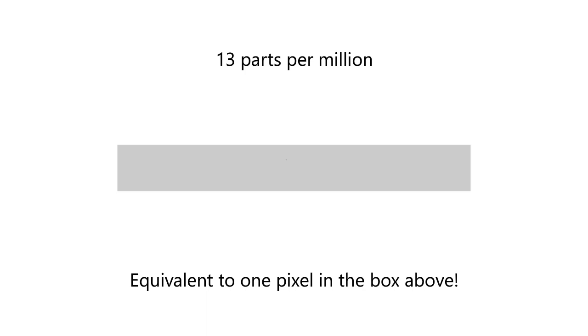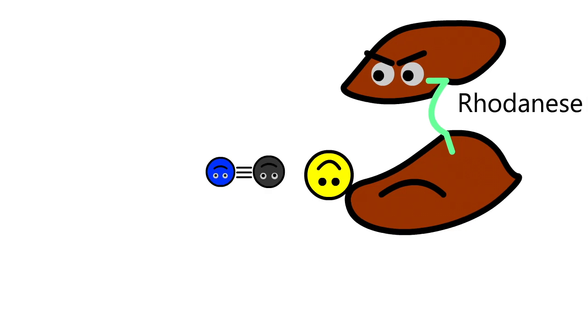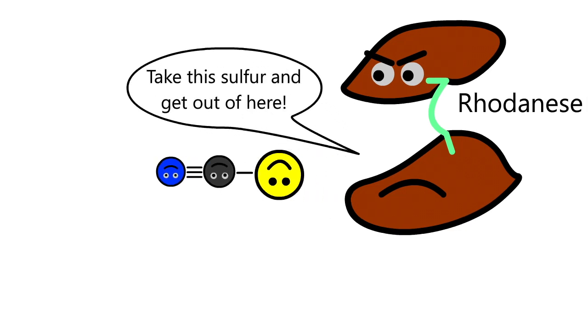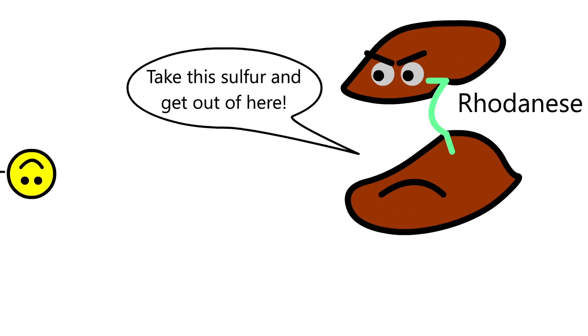That means for every million molecules of sodium chloride, there can only be 13 molecules of sodium ferrocyanide — a minuscule amount. So even if by some strange means the cyanide-iron bond were broken, our bodies would be able to handle the free cyanide released.